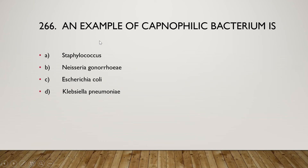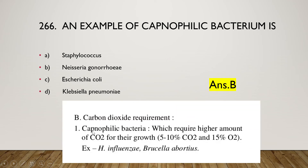An example of a capnophilic bacterium is Staphylococcus, Neisseria gonorrhoeae, Escherichia coli, or Klebsiella pneumoniae? The right answer is option B, Neisseria gonorrhoeae. Capnophilic bacteria require higher amounts of CO2 for their growth — 5 to 10 percent CO2 and 15 percent O2. Examples include Haemophilus influenzae and Brucella abortus.